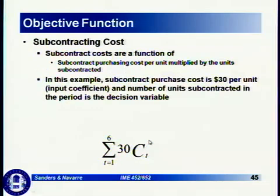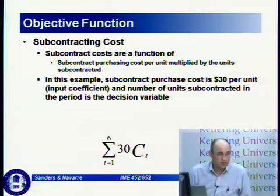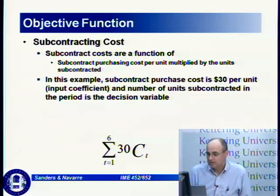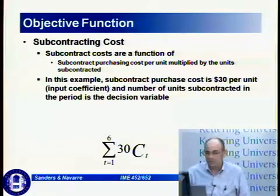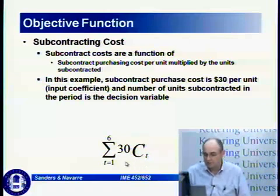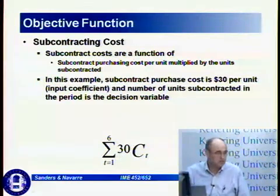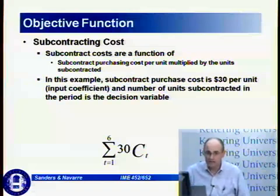Subcontracting costs are a function of the purchasing cost per unit multiplied by units subcontracted. In this example, the subcontract purchase cost is $30 per unit — an input coefficient — and the number of units contracted C_T in the period is the decision variable. So C_T is the number of units contracted out, and the cost per unit is $30, representing the make-versus-buy decision.